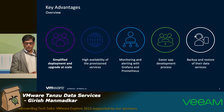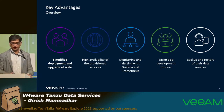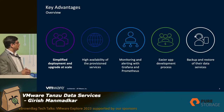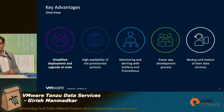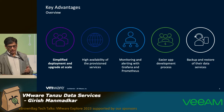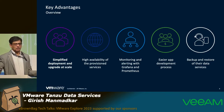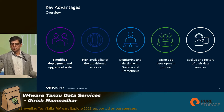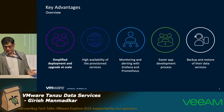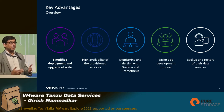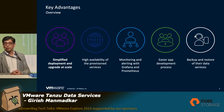Key advantages are very straightforward. Simplification — it's all about simplification, whether it's deployment or upgrade at scale. High availability is always the main concern when productionalizing your deployment, and it supports high availability of your services easily. Monitoring and alerting are key aspects of any application, and it is well integrated with Grafana and Prometheus. Backup and restore is also there, and the overall process has been simplified from where we were earlier.